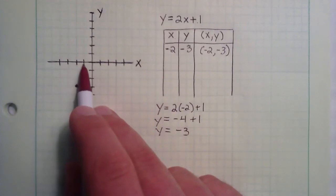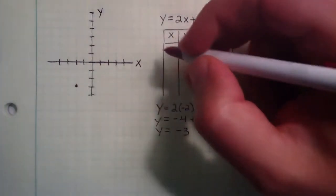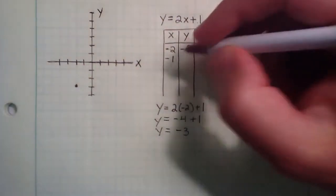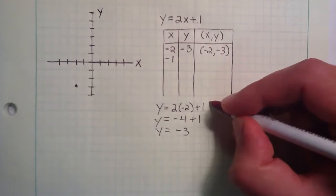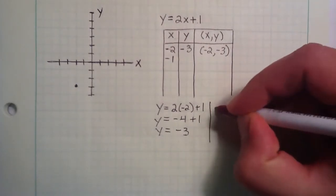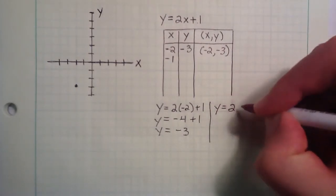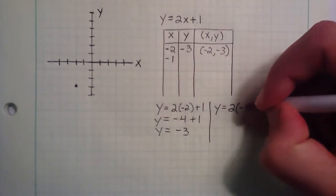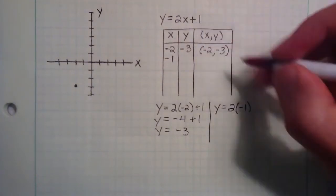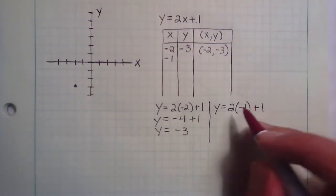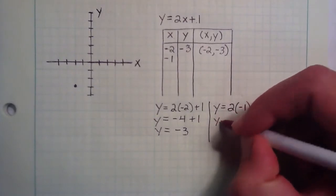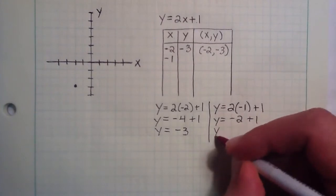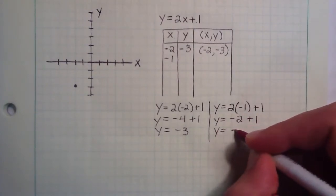So let's move over one unit to the right for our x component. So we'll start with the x component negative 1. And we're going to find the corresponding y component. So we just do the same process. Y equals 2x plus 1. And this time our x is negative 1. And then we add the 1. 2 times negative 1 gives us negative 2. Adding the 1.